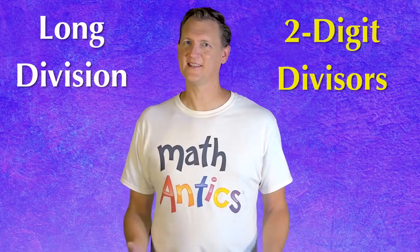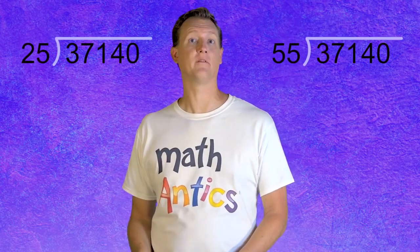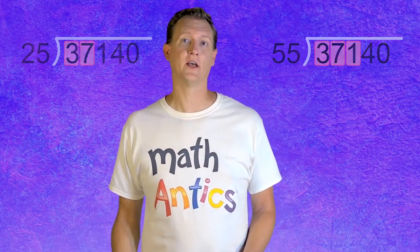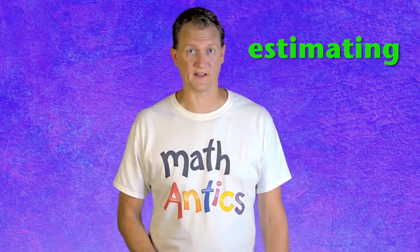Alright, now you know that the long division procedure works the same for 2 digit divisors. It's just that each division step will involve 2 or 3 digits of the dividend. And since each of those bigger steps is harder to figure out, you'll want to use estimating to help you find the answers. And while it's good to know how to do complex division problems like this, we still think that complex division problems are a job for your calculator.